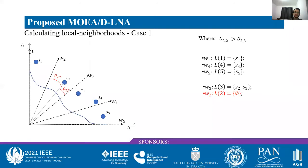The first step of the adaptation procedure consists of calculating the angular distances between all solutions and all weight vectors. Solutions are then allocated to the local neighborhoods of the closest weight vector. To explain this, we present a two-dimensional problem in different scenarios. In these examples, there are five weight vectors and five solutions from the archive, represented as dashed lines and blue dots respectively. In the first case, solutions S1, S4, and S5 are allocated to the local neighborhoods of weight vectors W1, W4, and W5, as these are the closest vectors.